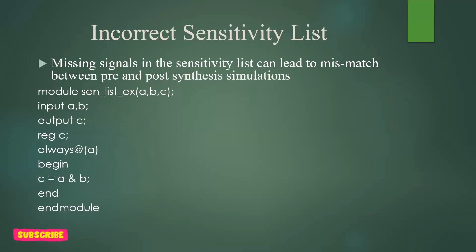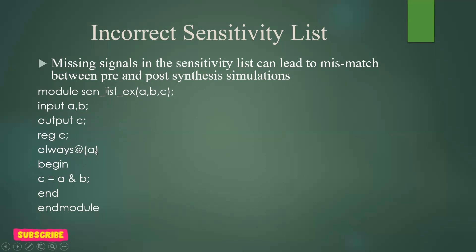Next is incorrect sensitivity list. Missing signals in the sensitivity list can lead to a mismatch between pre-synthesis and post-synthesis simulations. For example, with two inputs a and b and output c, if you write always @(a) but do not mention b, there are chances the code shows different values during simulation before synthesis versus after synthesis.